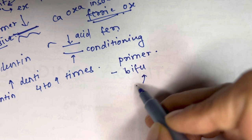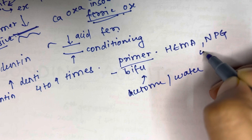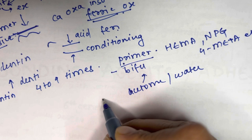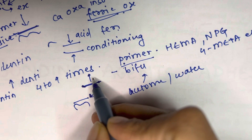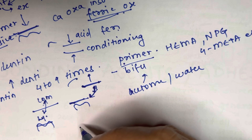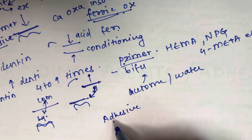The next agent in the third generation is the primer. The primer contains a bifunctional hydrophilic monomer dissolved in solvents like acetone, ethanol, or water. Examples of primers are HEMA, NPG, or 4-META. The functions of the primer are: it links the hydrophilic dentine to the hydrophobic adhesive resin, promotes infiltration of the demineralized dentine, and increases the wettability of the dentine surface.